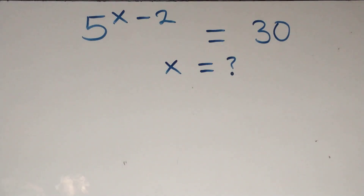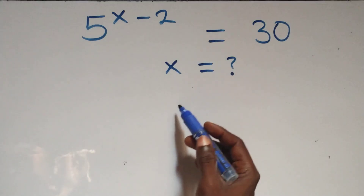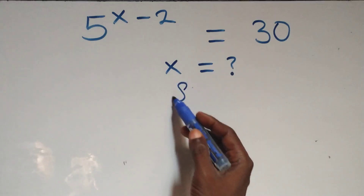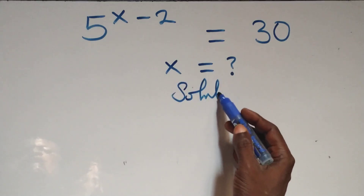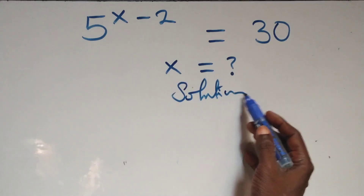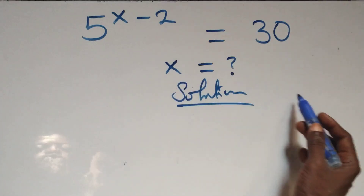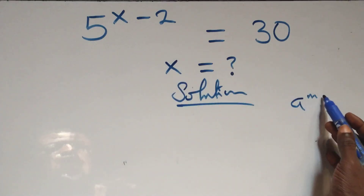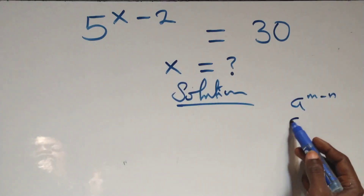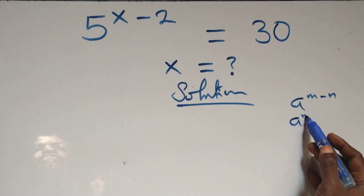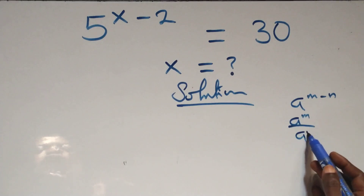Hello, you're welcome. How to solve this nice exponential equation, solution from here. What we have here is: when we have a raised to power n minus n, which is the same thing as a raised to power n over a raised to power n.